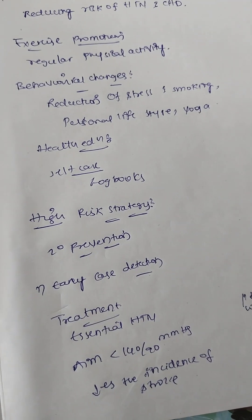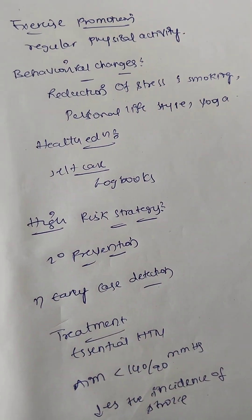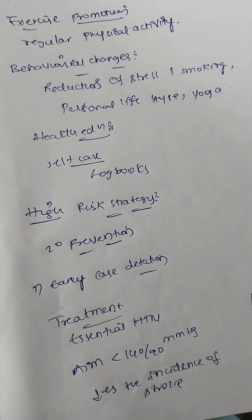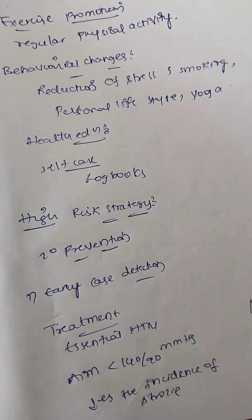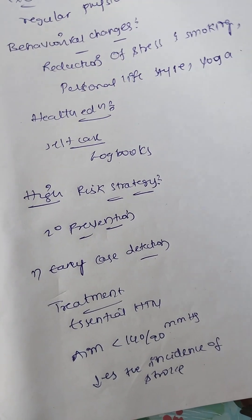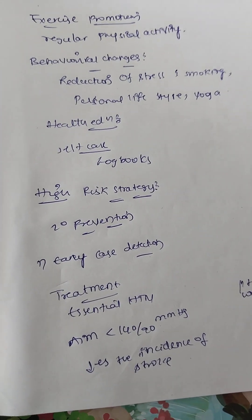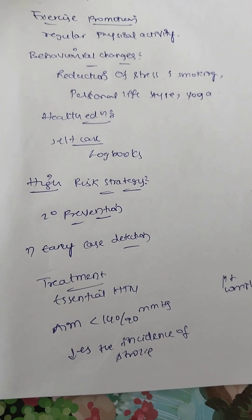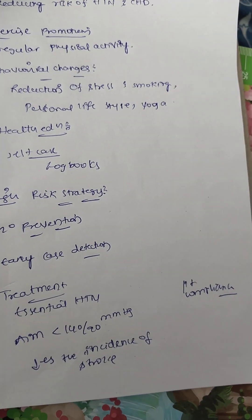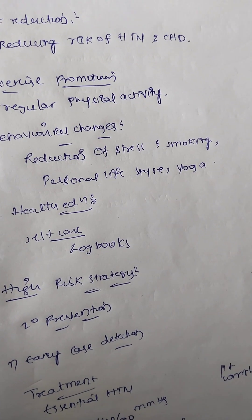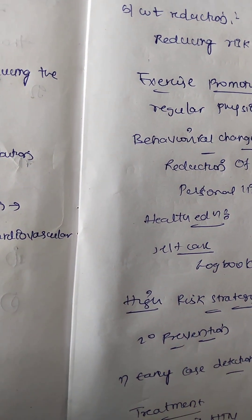For the high-risk strategy, treatment options include telmisartan, direct renin inhibitors like aliskiren, furosemide, and calcium channel blockers. Early case detection is key to preventing complications. The aim of treatment for essential hypertension is to reduce blood pressure from 140/90 mmHg to 120/80 mmHg, thereby reducing the incidence of stroke. Patient compliance is also important. Hypertension is the main cause of stroke — if unrecognized and delayed, it is the most common cause of death in hypertension.